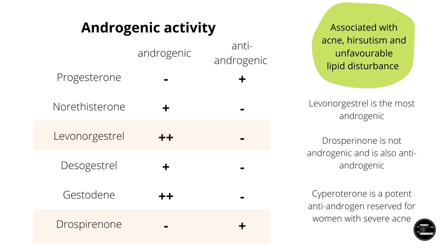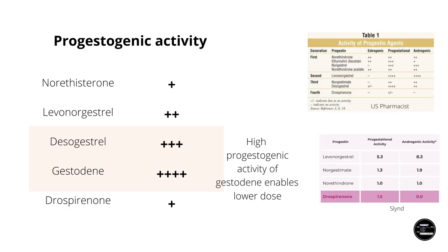Cyproterone acetate is a potent anti-androgen which, when given with estrogen, is reserved for women with clinical hyperandrogenism who also require contraception. Gestodene has androgenic activity, but also has high progestational activity, so can be given in low doses which reduce its overall androgenic effect. Drospirenone is notable for being the only progestin with both anti-mineralocorticoid and anti-androgenic activity. As for progestogenic activity, naturally all progestins have this, but some are more potent than others — gestodene is the most progestogenic, enabling lower doses to be used in contraceptive formulations, and similarly with desogestrel, which I will talk about more in parts two and three.